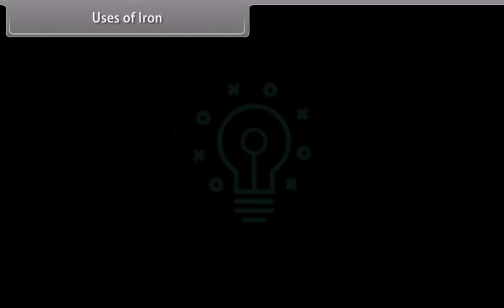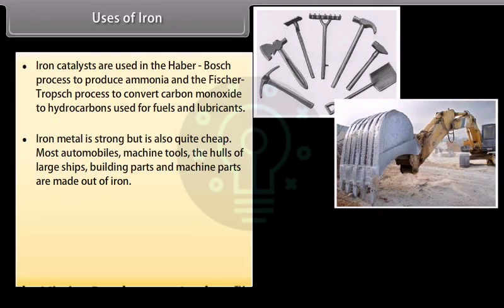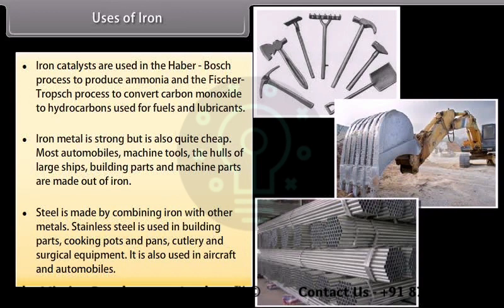Uses of iron. Iron catalysts are used in the Haber-Bosch process to produce ammonia and the Fischer-Tropsch process to convert carbon monoxide to hydrocarbons used for fuels and lubricants. Iron metal is strong but is also quite cheap. Most automobiles, machine tools, the hulls of large ships, building parts and machine parts are made out of iron. Steel is made by combining iron with other metals. Stainless steel is used in building parts, cooking pots and pans, cutlery and surgical equipment. It is also used in aircrafts and automobiles.